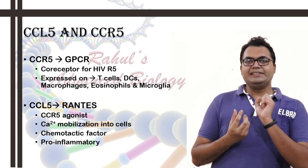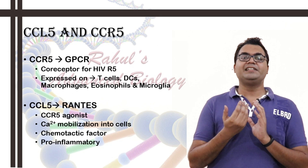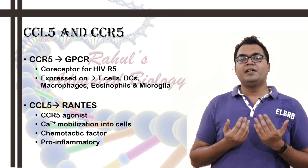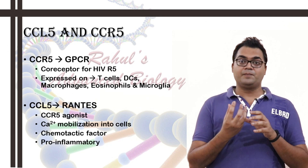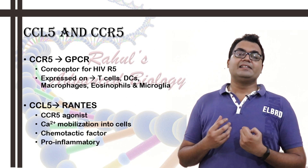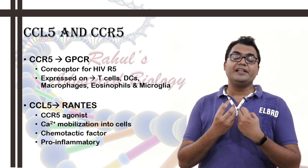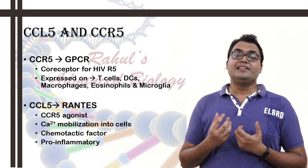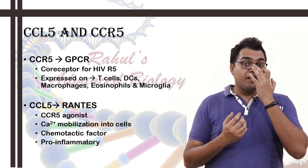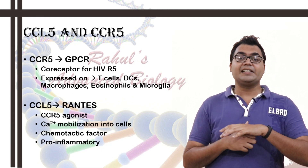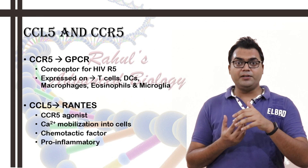Specifically, CCL5 — chemokine CC motif ligand 5 — also known as RANTES (regulated on activation, normal T cell expressed and secreted) — binds specifically to CCR5, the chemokine receptor 5. CCR5 is expressed on dendritic cells, T cells, macrophages, eosinophils, and microglia. CCR5 has also been found to be upregulated in specific cancer subpopulations like prostate and breast cancer epithelial cells, but not on non-cancerous cells. After binding, it causes calcium mobilization and acts as a chemotactic factor for various immune cells.